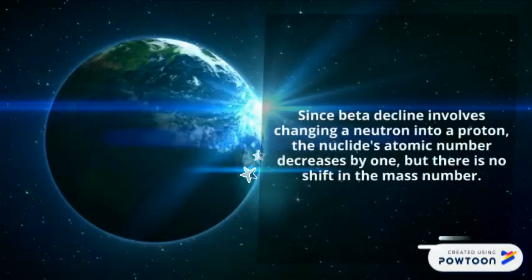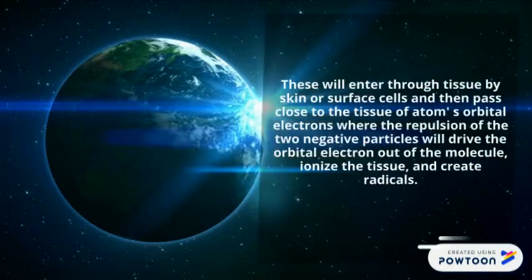Since beta decay involves changing a neutron into a proton, the nuclide's atomic number increases by one but there is no shift in the mass number. Beta particles will enter through tissue by skin or surface cells and pass close to the tissue's orbital electrons. The repulsion of the two negative particles drives the orbital electrons out of the molecule, ionizing the tissue and creating radicals.